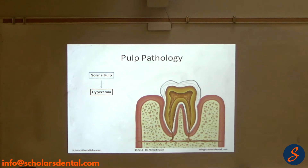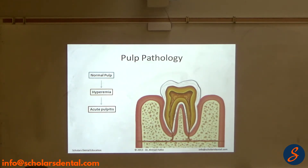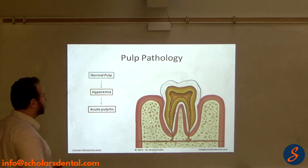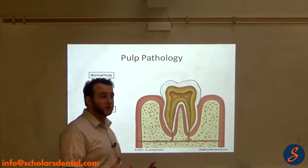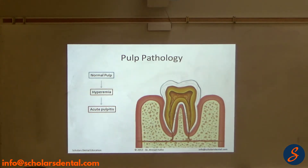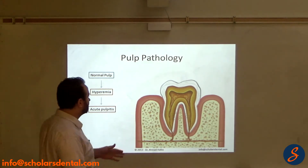And if it keeps going to a point where it becomes acute inflammation, then we call that acute pulpitis — so now we have acute inflammation in the pulp. There are all those chemical mediators from inflammation released in the pulp, there's also neurogenic inflammation, there's acute inflammation, and inflammation means there's swelling, edema.